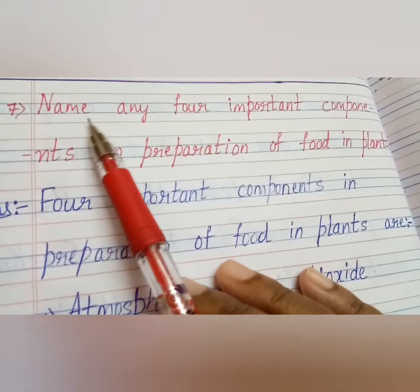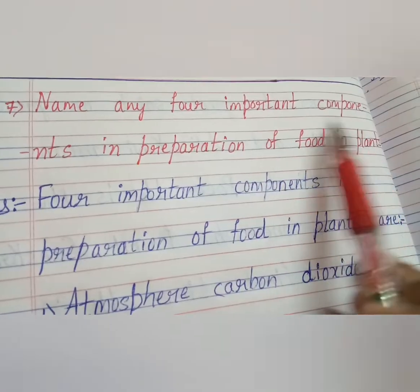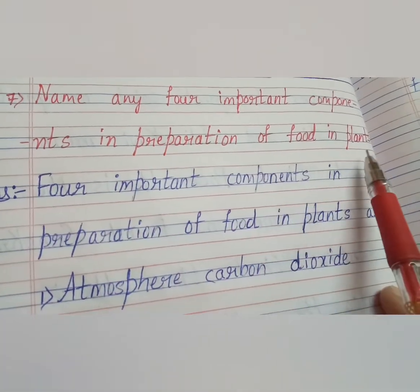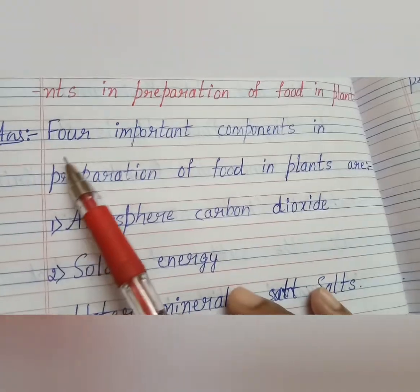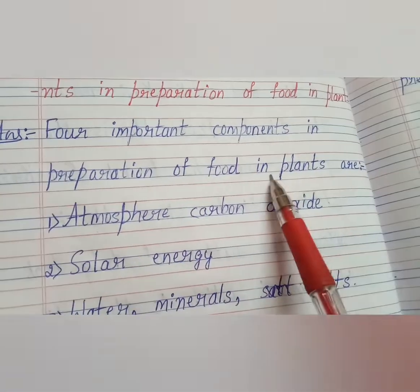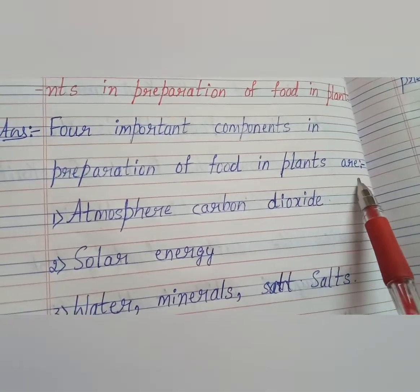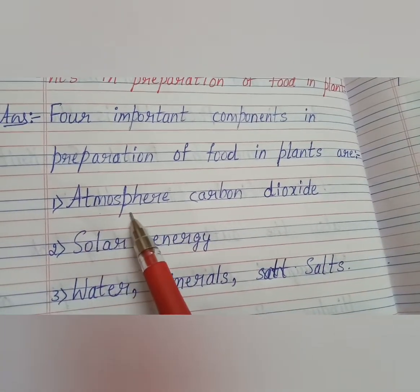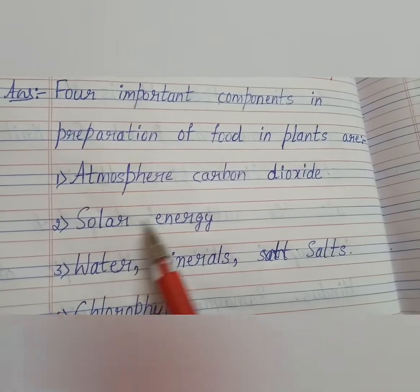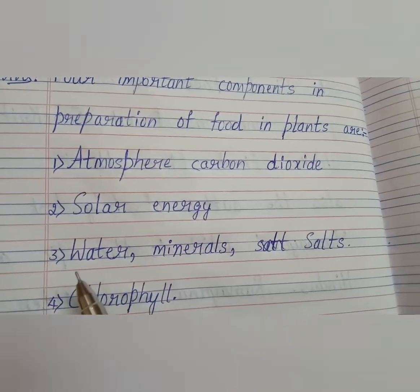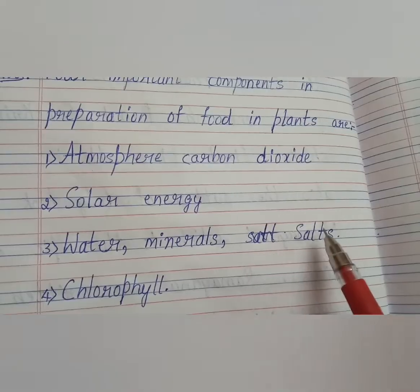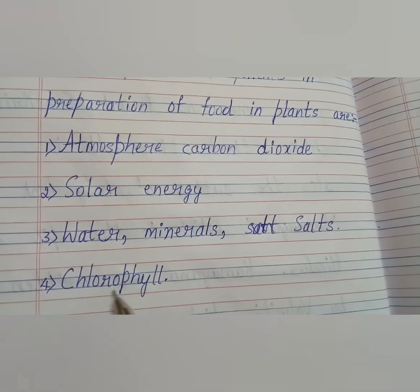Next question: name any four important components in preparation of food in plants. The four important components are: first, atmosphere — carbon dioxide; second, solar energy; third, water, minerals and salts; fourth, chlorophyll.